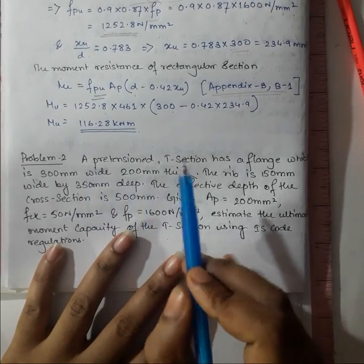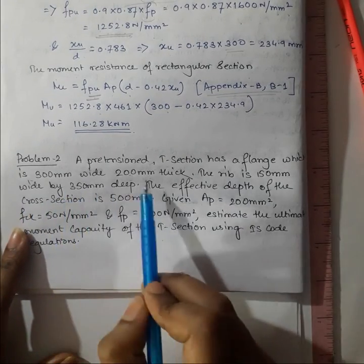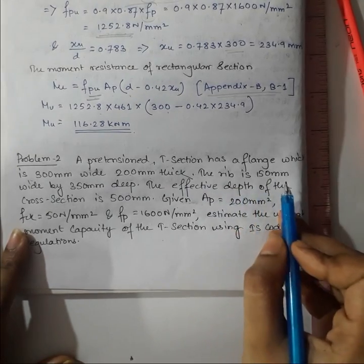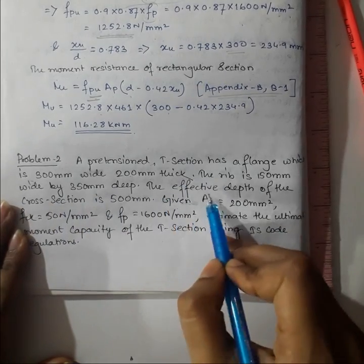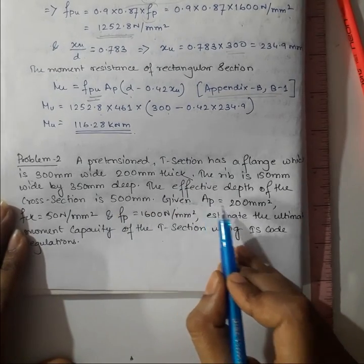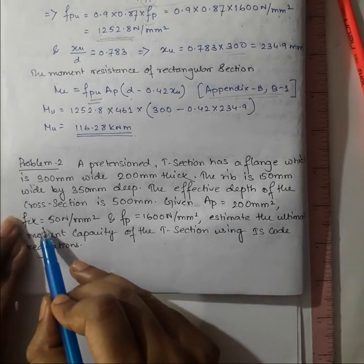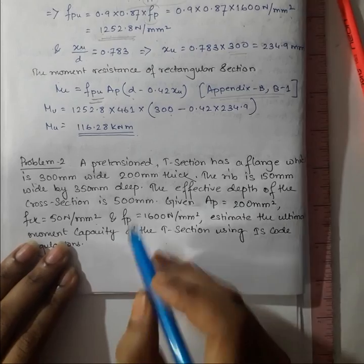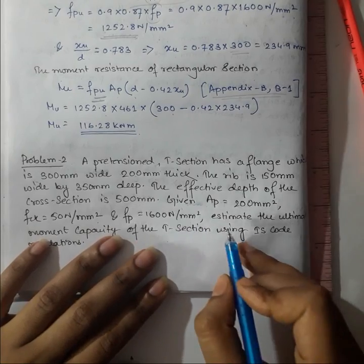A pre-tensioned T-section has a flange which is 300 mm wide and 200 mm thick. The rib, meaning the web, is 150 mm wide by 350 mm deep. The effective depth of the cross-section is 500 mm. The given area of pre-stressing steel is 200 mm². fck equals 50 N/mm² and fp, the pre-stressing steel stress, is 1600 N/mm².